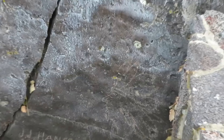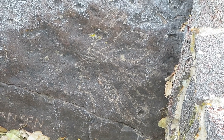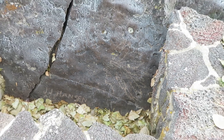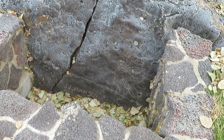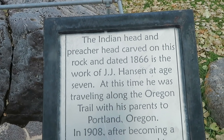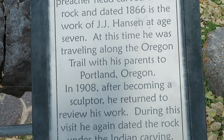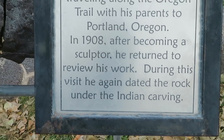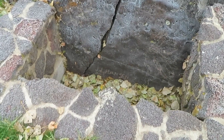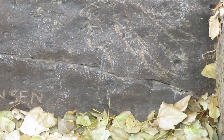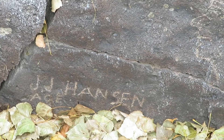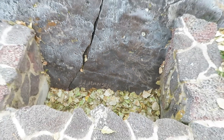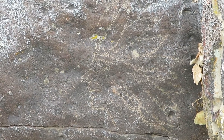There's something else interesting on this little boulder just over here. Oh yeah, there it is — it's an Indian head. Apparently there's a preacher's head too. The sign here says it was done in 1866 when he was seven years old. He carved the Indian head while on the Oregon Trail, and then in 1908, after becoming a sculptor, he returned to review his work. That's when he dated the rock under the Indian carving. Man, he did that when he was seven years old — that's better than what I could do now.